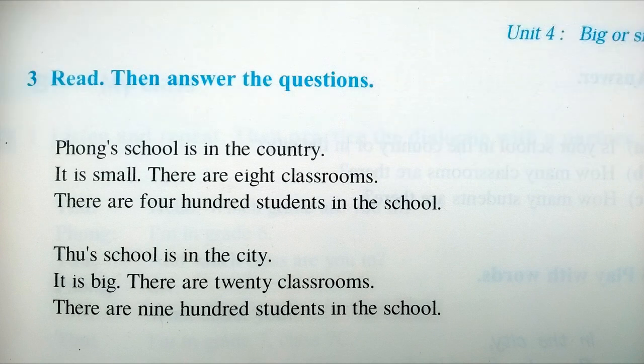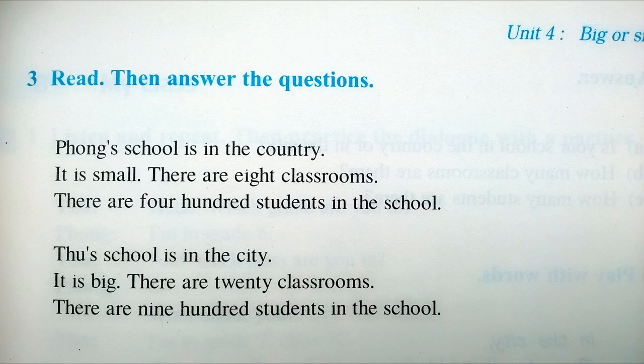Three: Read then answer the questions. Fong's school is in the country. It is small. There are eight classrooms. There are 400 students in the school. Tu's school is in the city. It is big. There are 20 classrooms. There are 900 students in the school.